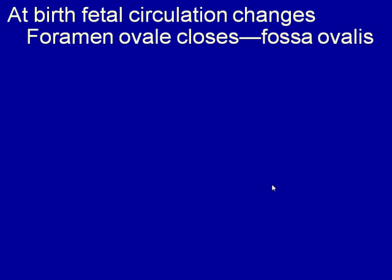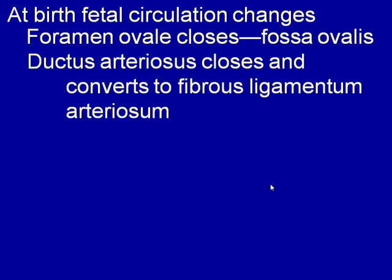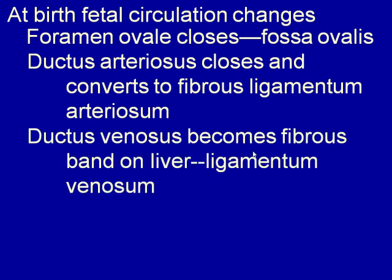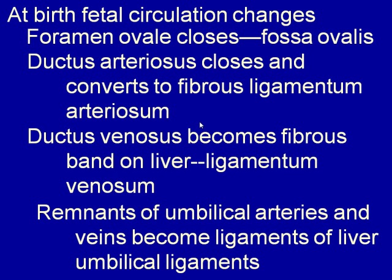At birth, fetal circulation changes. The foramen ovale closes within a few hours, leaving a depression called the fossa ovalis. The ductus arteriosus spasms closed and becomes fibrous tissue called the ligamentum arteriosum. The ductus venosus, once blood stops flowing from the placenta, spasms down and becomes the ligamentum venosum, which helps hold the liver in place. The umbilical arteries, once the cord is cut, spasm closed and become ligaments supporting the liver and umbilical region.